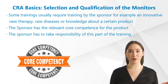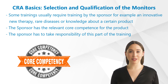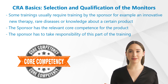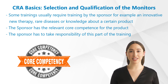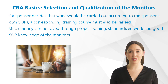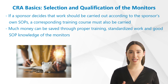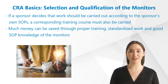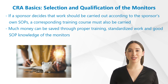Topics that cannot be easily read or trained externally usually require training by the sponsor — for example, an innovative new therapy, rare diseases, or knowledge about a certain product. The sponsor has the relevant core competence, and nobody knows the product as well as the sponsor himself. Therefore, the sponsor has to take responsibility for this part of the training. Pay attention to the documentation of training activities and ask for training records, training logs, or certificates. If a sponsor decides that work should be carried out according to the sponsor's own SOPs, a corresponding training course must also be carried out and documented as attendance training or as self-training. Some sponsors do this in an exemplary manner; others do not understand how much money can be saved through proper training, standardized work, and good SOP knowledge of the monitors — instead they try to save at the wrong end.